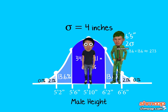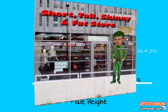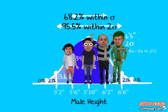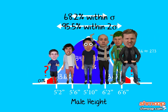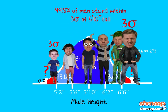In Gene's case, he falls into the 27.3% of the population who is either shorter than 5'6" or taller than 6'2", so he has to shop at one of these. At least Gene still falls into the 95.5% of the population within two standard deviations of the average. But what about that other 4.5%? Anyone shorter than 5'2" or taller than 6'6" will land three standard deviations from the average — these guys make up 4.2% of the population. That means 99.8% of men stand within three standard deviations of 5'10".